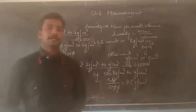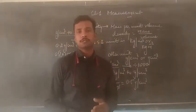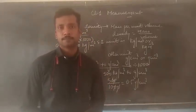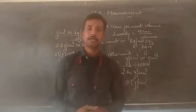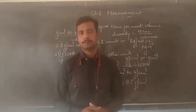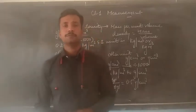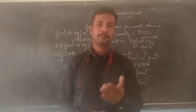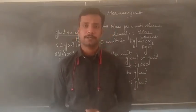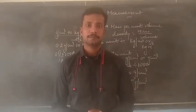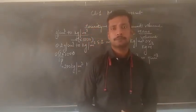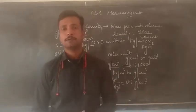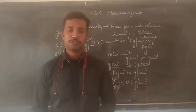Let us now take an example: how to find out the density of an irregular object. First of all, you should know what is meant by an irregular object. It is an object which does not have a definite length, breadth, and thickness or height. A rock is an example — it does not have a definite length, breadth, and height, so it is an irregular shaped object.